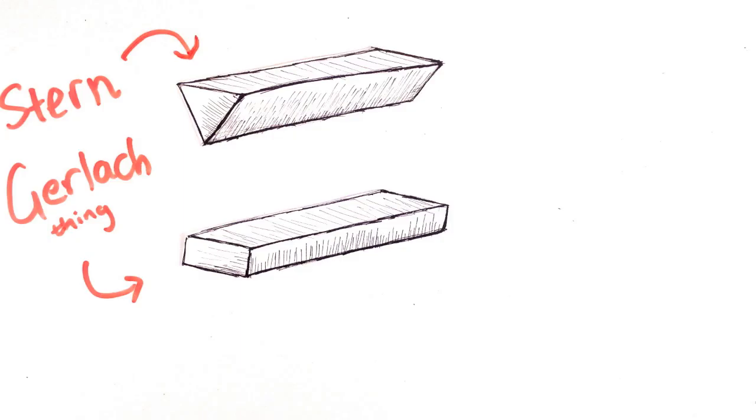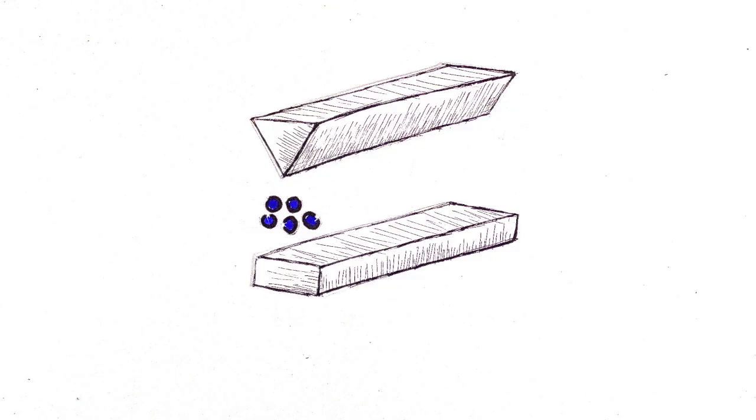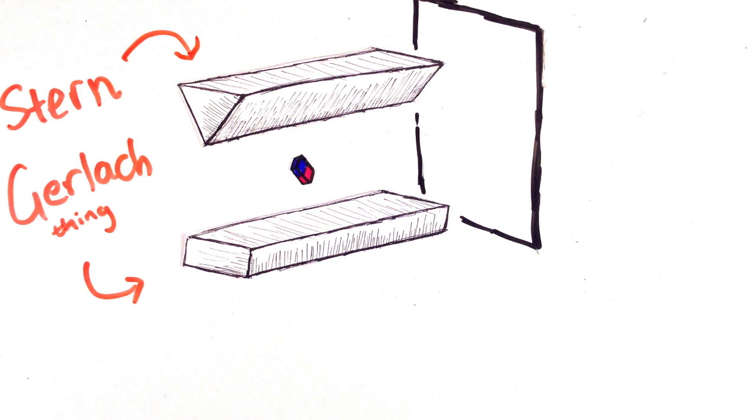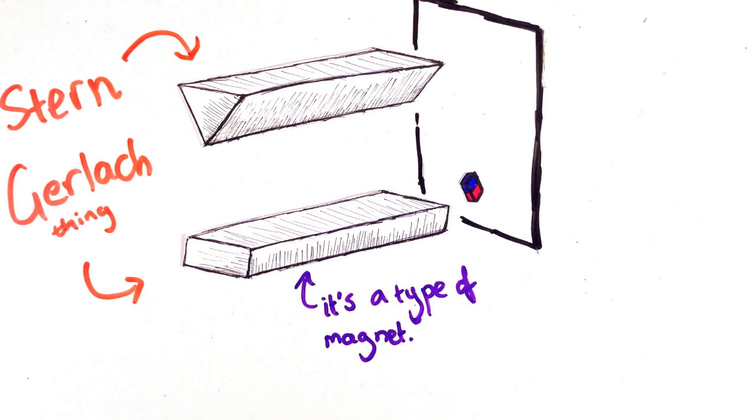Let's say we have a bunch of electrons by themselves. They are charged, but they're not doing little loops, so they shouldn't be magnets. We test this out by putting them in a Stern-Gerlach apparatus. I'm not going to explain how the machine works, but what it does is this.